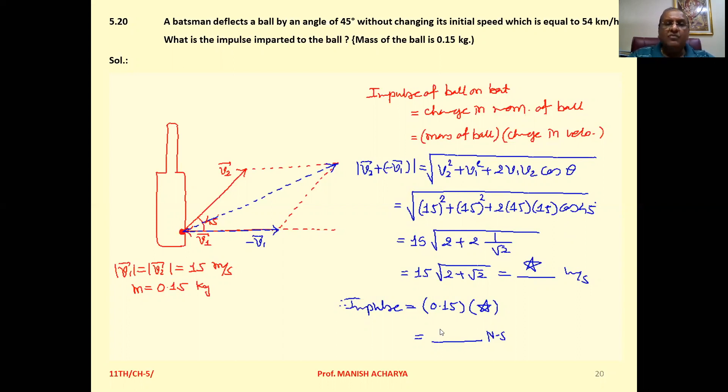Now mass of ball that is 0.15. Substitute this value of the change in velocity here. Then solve it. You will get impulse on ball. Clear to all of you.